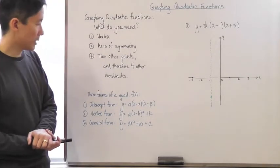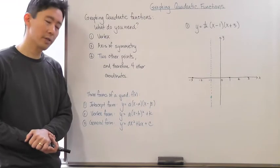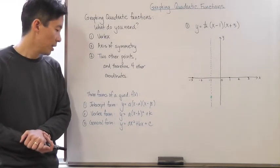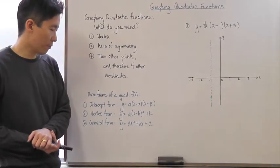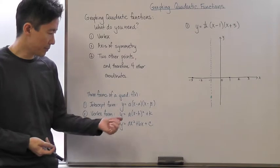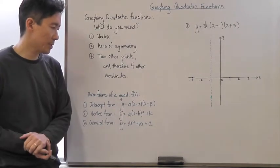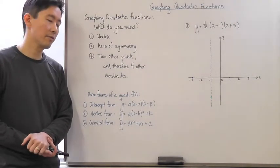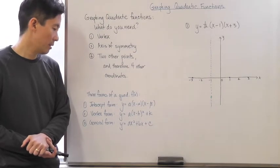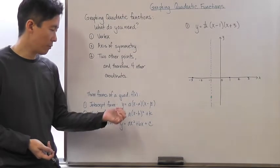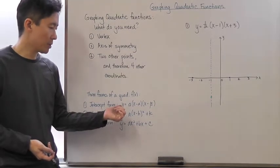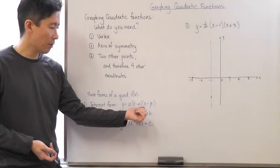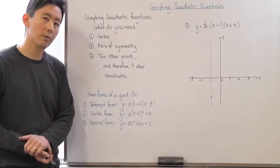Let's take a look at the three forms of a quadratic function. The first one is called the intercept form. It's called that because it's factored, so it's very easy to determine the x-intercepts — if we let y equal zero, then x equals alpha or x equals beta.